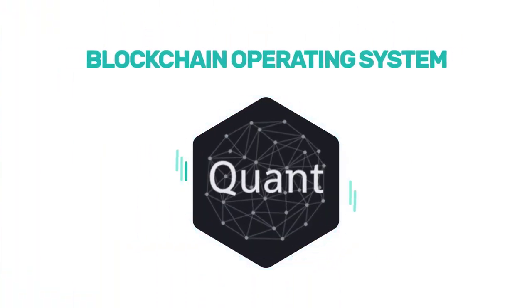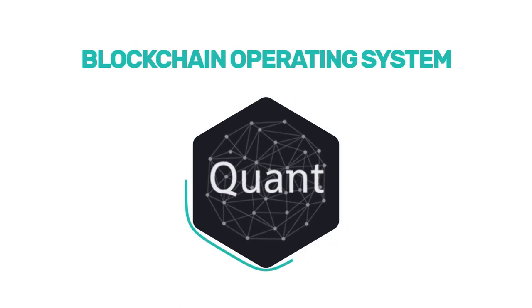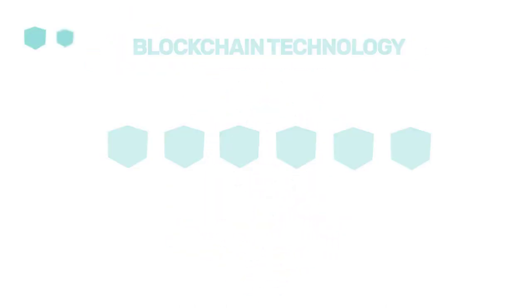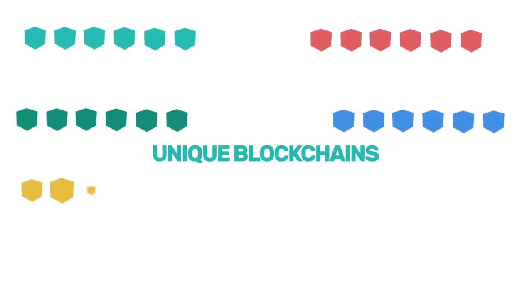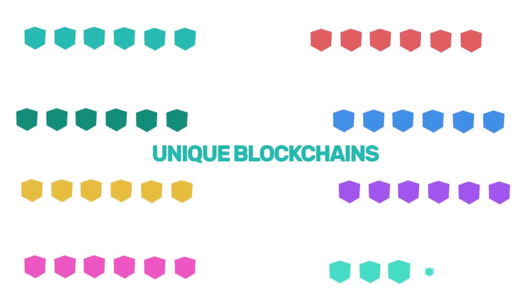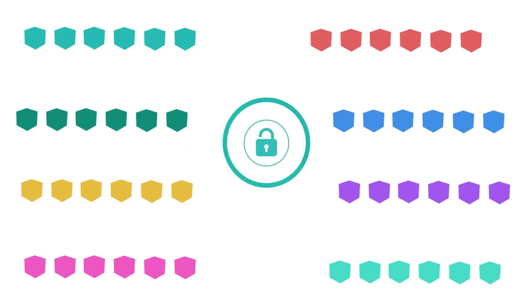Before moving forward, this is not some fairytale project — the much-needed technology is already created and fully functioning, and has already been adopted by major enterprises. This technology is called Overledger. Instead of creating another blockchain, the Quant Network team created an operating system that manages them, called Overledger. Overledger can only be utilized by staking or locking Quant tokens in exchange for a license, which grants access to the Overledger operating system for a certain amount of time.